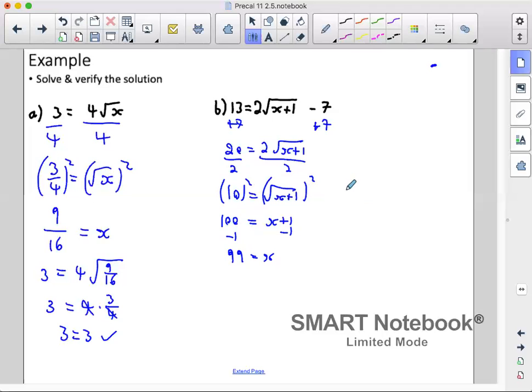We'll verify it now. So we have 13 is equal to 2 root of 99 plus 1 minus 7. We'll simplify what's inside our root first. So we have 13 equals 2 root of 100 minus 7. We can take the root of 100. So we have 13 is equal to 2 times 10 minus 7. So we have 13 is equal to 13.